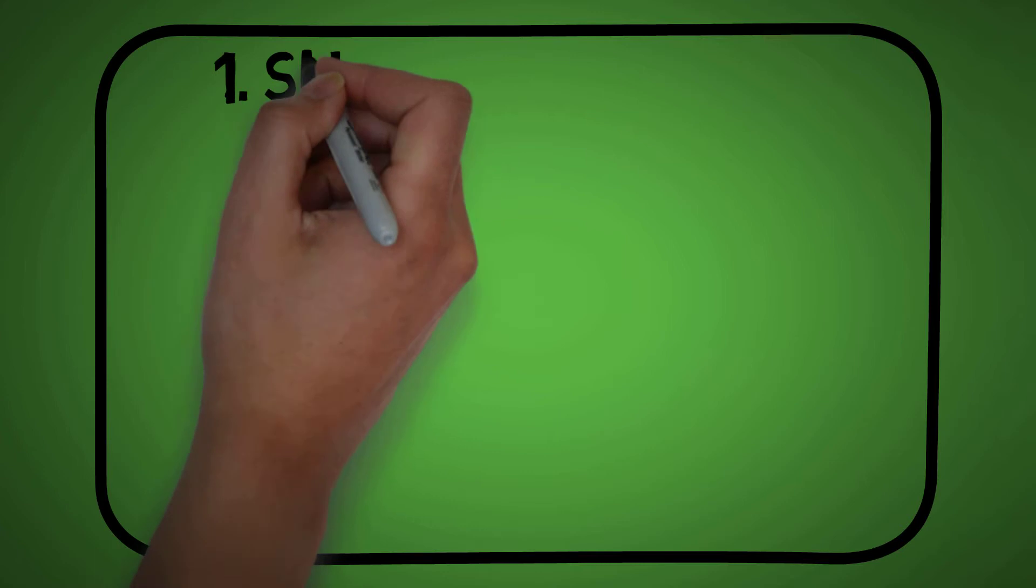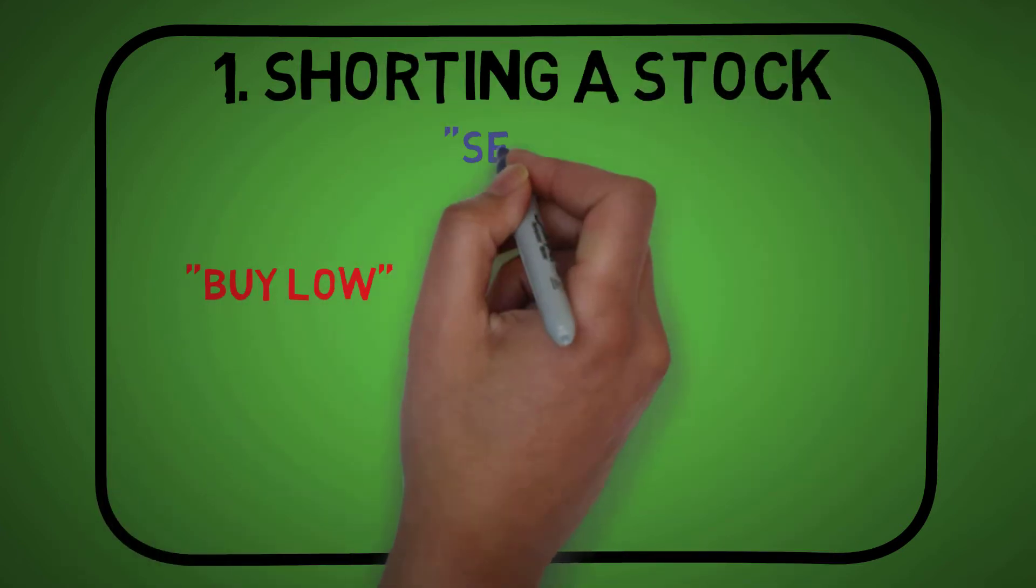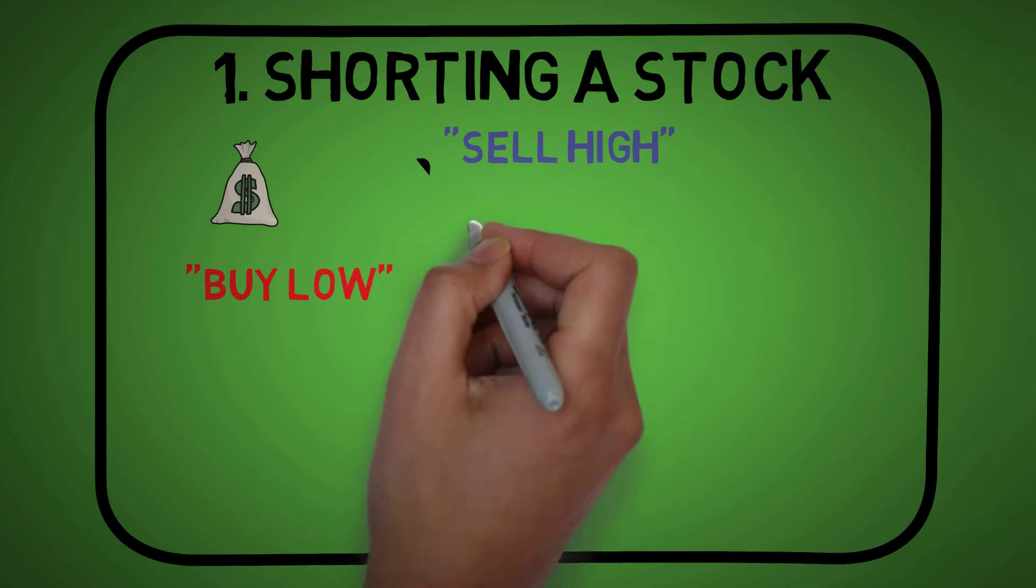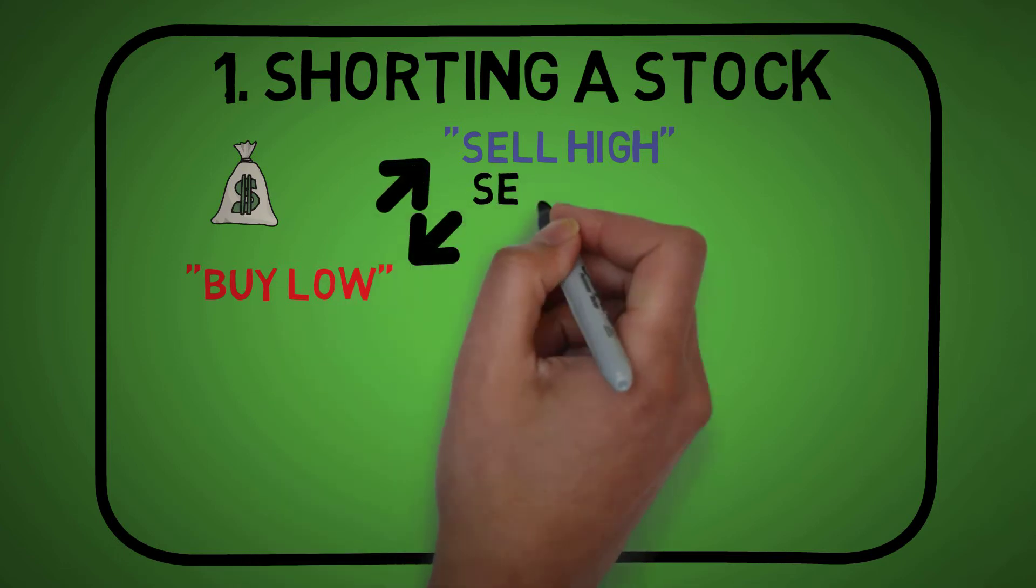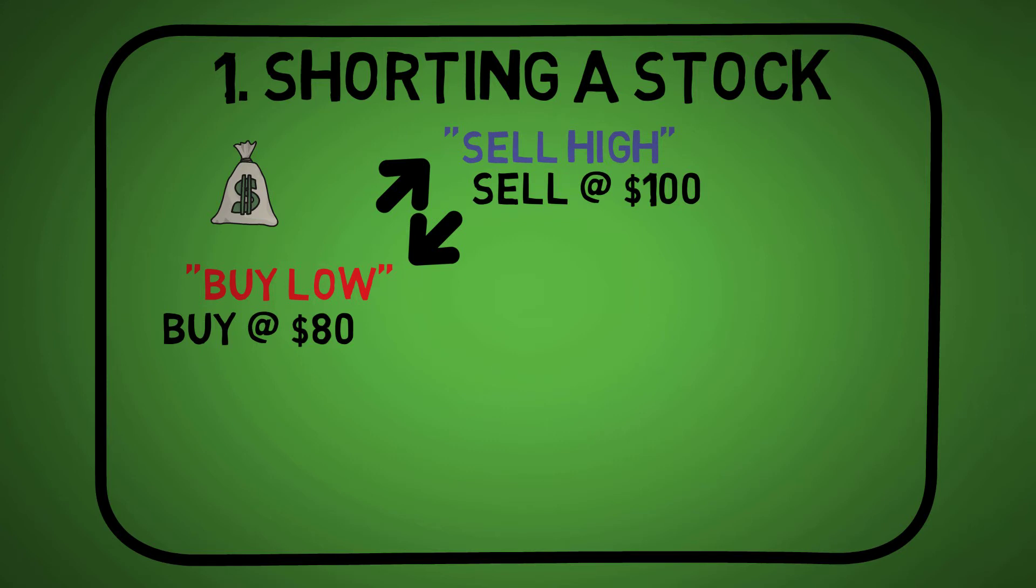Number 1, shorting a stock. The first thing that all investors are told is to buy low and sell high. If the stock price goes up, we make money. If it goes down, then we are losing. Shorting a stock is the opposite of that. We sell the stock at $100, then we buy back at $80 for the 20% gain. It's not that complicated.